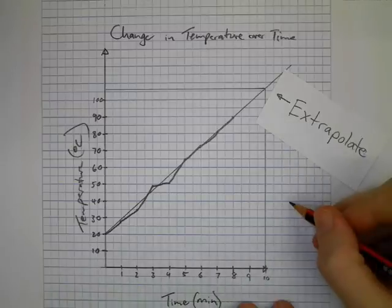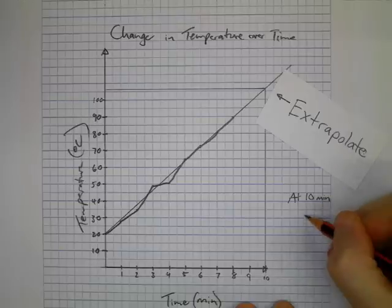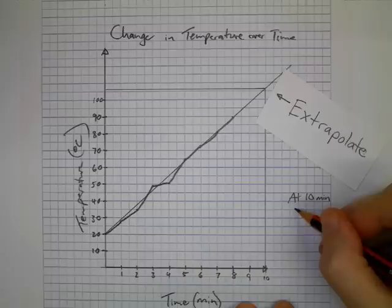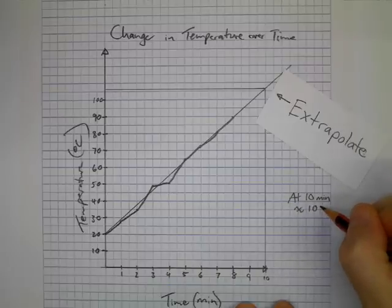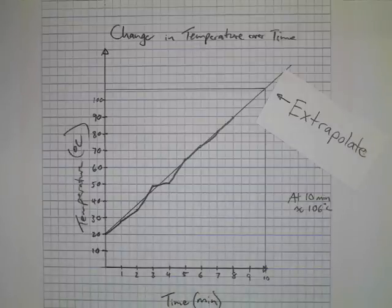Extrapolating means going beyond our data. For example, here we're looking at 10 minutes and we've ruled a line up from 10 minutes. And where it hits our line of best fit, we can draw a line across. And it tells us that at 10 minutes it would be at about 106 degrees, if our prediction is right.